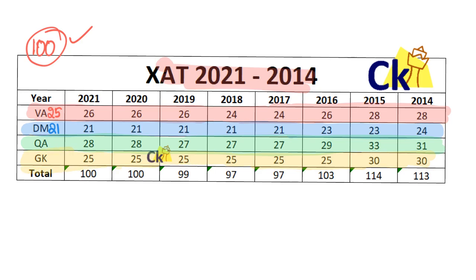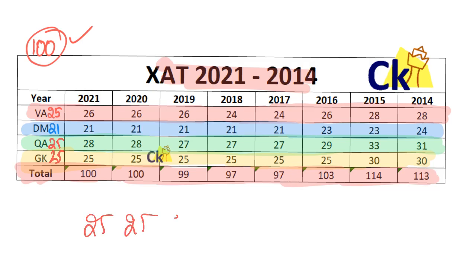So total will be 100. This is confusing because if I don't know how many questions are going to come, how can I formulate my strategy? The best way out is to assume 25 questions per section — 25, 25, 25, 25 — and plan accordingly.